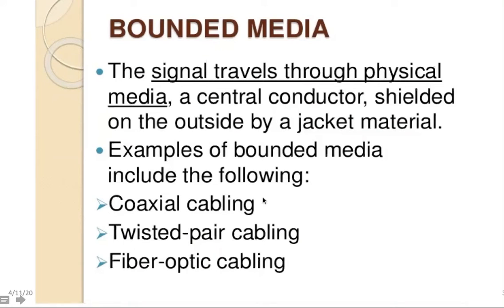Examples of bounded media include coaxial cabling, twisted pair cabling, and fiber optic cabling. Coaxial cabling has a single wire surrounded by a different material, typically a polymer or plastic material. The best example is your dish TV wire — it's a coaxial cable, meaning the central axis of the inner wire coincides with the center of the outer cladding.